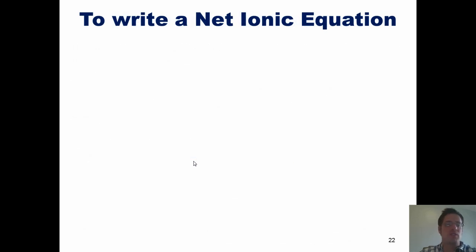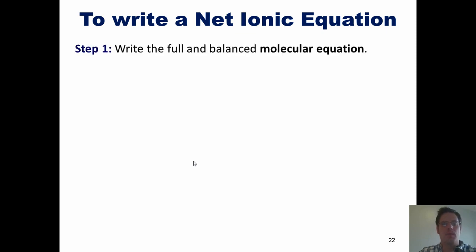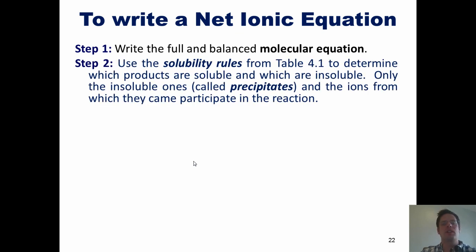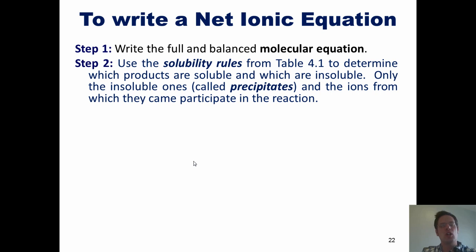So here are the steps we have to follow in order to write a net ionic equation. Step one: write the full and balanced molecular equation. Step two: use the solubility rules to determine which products are soluble in water and which ones are not. Only the insoluble ones — called precipitates — and the ions from which they came participate in the reaction.